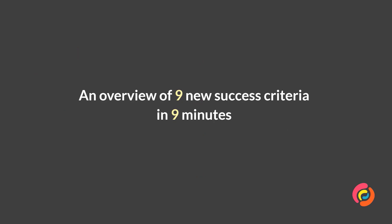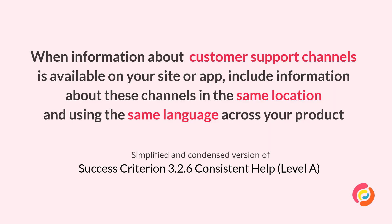Let's do a quick run through of the nine new proposed success criteria in nine minutes. Let's start by looking at the four level A criteria. Our first criterion is 3.2.6, Consistent Help. In plain language, this requirement asks that when information about customer support channels is available in your product, whether that be a website or an app, that you include that information in the same location and using the same language across your product.